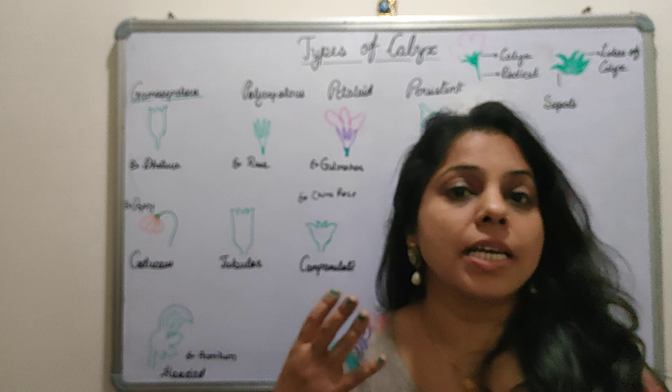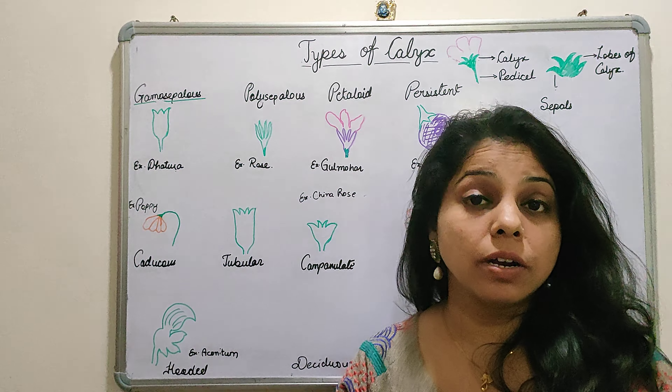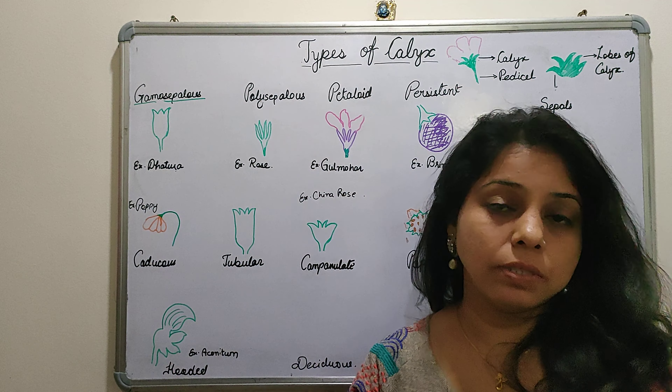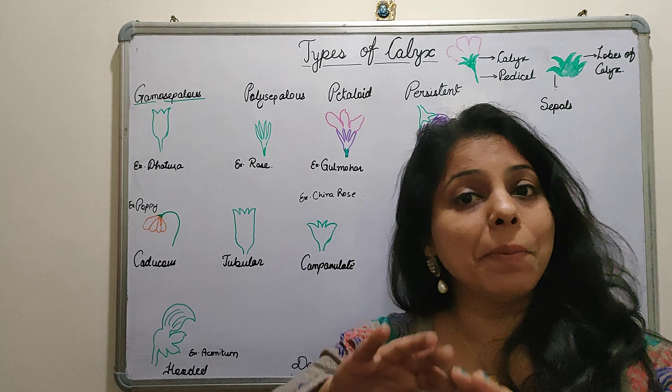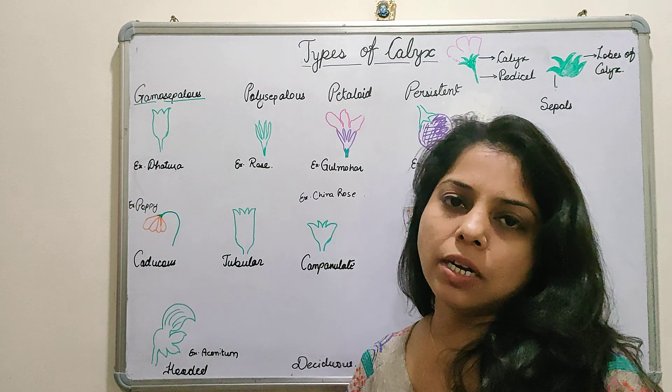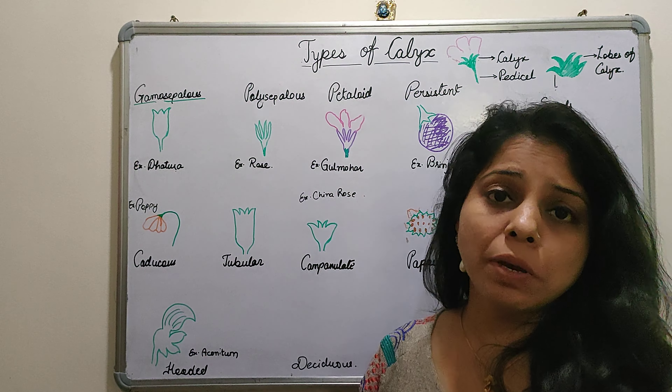Moving to the next: Polysepalous. In polysepalous condition, the sepals are free and separate from each other — they are not fused. This condition you get to see in many plants.